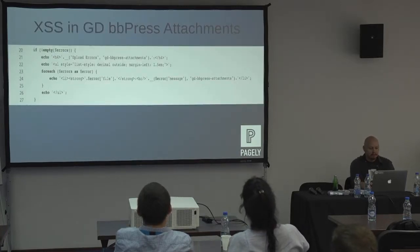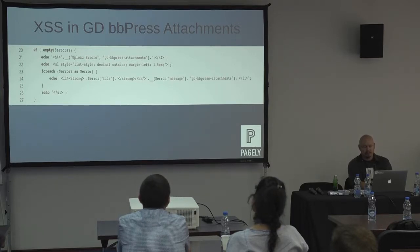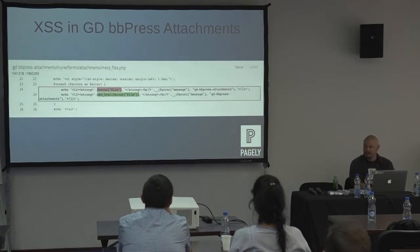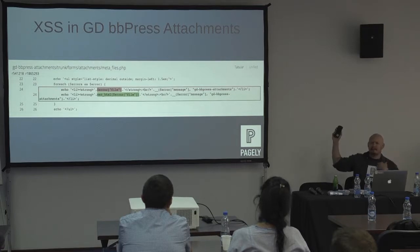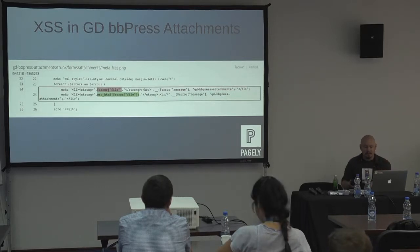BBPress attachments — this one's a better example. Looking at the code, the vulnerability is probably the file name: they didn't escape the HTML output for the error file name. The fix is escape HTML. He expected HTML output but needed to escape it when outputting it back.